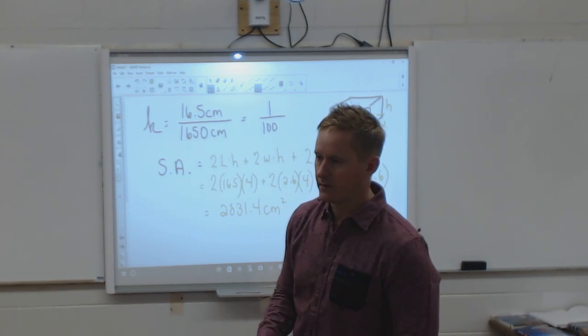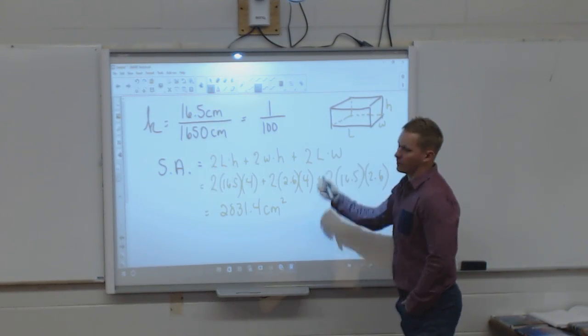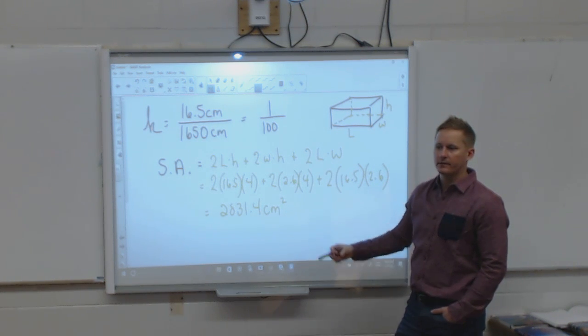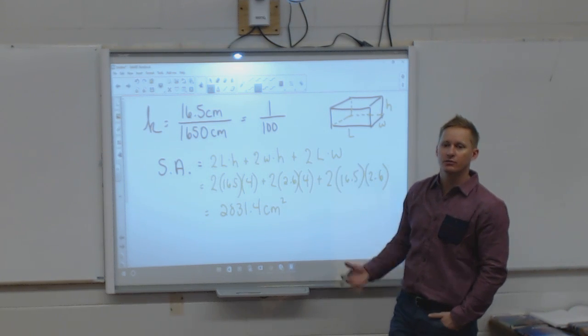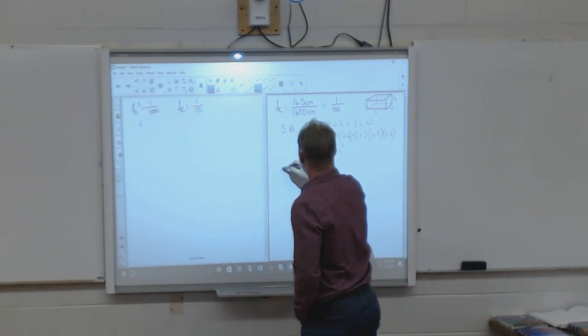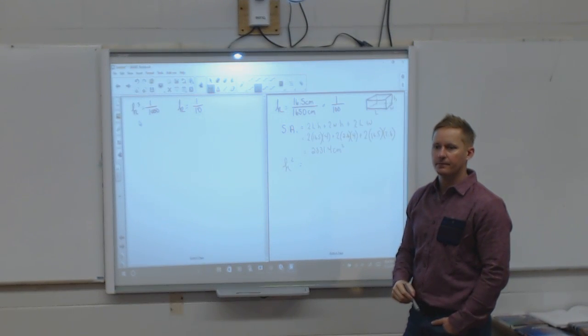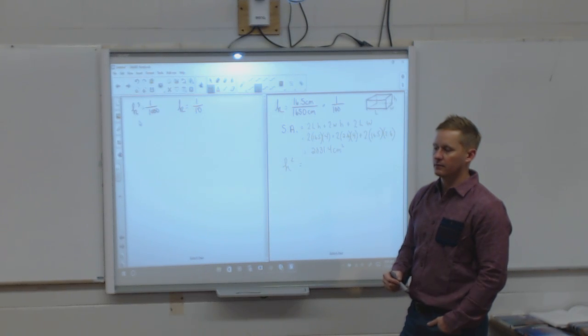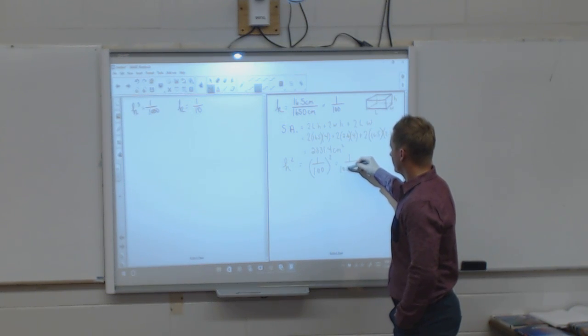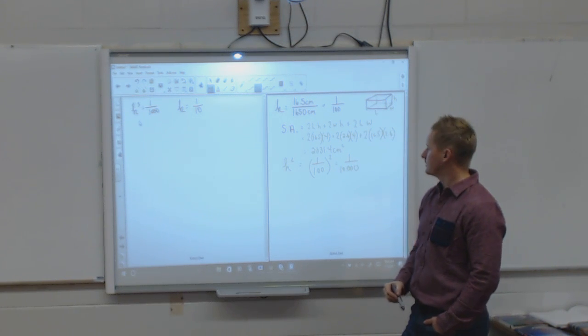So if the K factor is 1 over 100, the box is 1 over 100 the size of the actual train. Then I'm going to have to figure out what the K factor is, the K squared factor, to find out the actual size of it. So then what I'm going to do first is I'm going to find out what my K squared is. So what is my K squared? If K is 1 over 100, what is K squared? 1 over 100 squared, which actually is 1 over 10,000. So that's how I get my K squared factor.